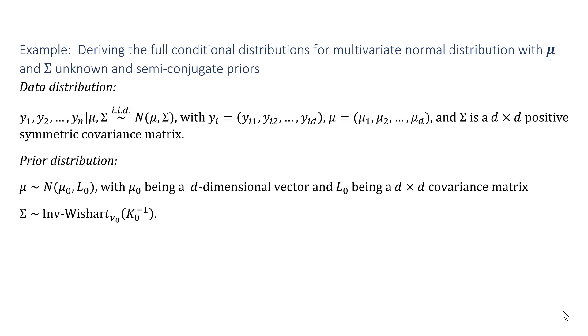In this video, we're going to derive the full conditional distributions for the parameters of a multivariate normal distribution. This is the first step in implementing a Gibbs sampler for approximating the posterior distributions of the parameters.